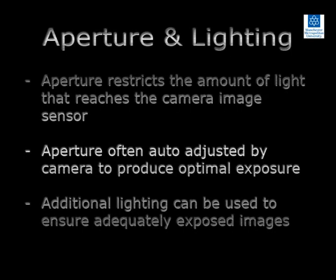In summary, the aperture is the hole in the lens that controls the amount of light that reaches the image sensor. A large aperture allows more light to reach the image sensor than a small aperture. The aperture can be manually adjusted on most cameras.